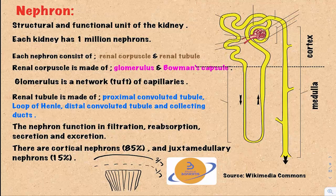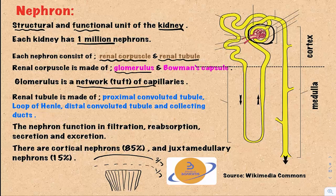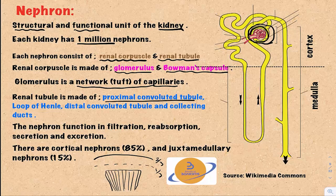Now let's talk about the nephron — the structural and functional unit of the kidney. Each kidney has about one million nephrons. The nephron consists of the renal corpuscle and the renal tubule. The renal corpuscle consists of the glomerulus — a network or tuft of capillaries — and the Bowman's capsule surrounding the glomerulus. The renal tubule consists of the proximal convoluted tubule, the loop of Henle, the distal convoluted tubule, and finally the collecting duct.